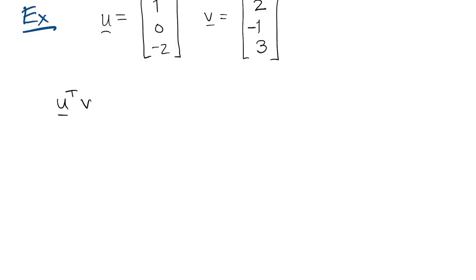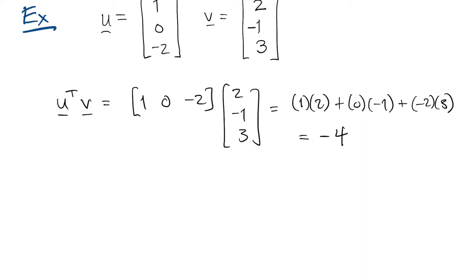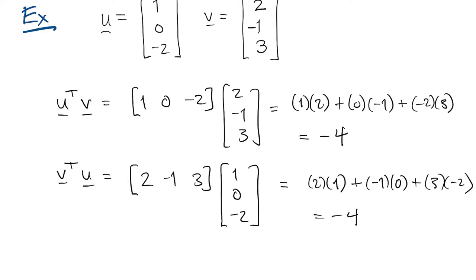Here's an example of these products on a couple of small vectors. For the inner product, u transpose v, we just add up 1 times 2, 0 times negative 1, and negative 2 times 3. The answer is negative 4. We could also do the inner product in the other order, v transpose u. So you just swap the positions of those two vectors. It's exactly the same. You're still multiplying the same pairs of numbers together.